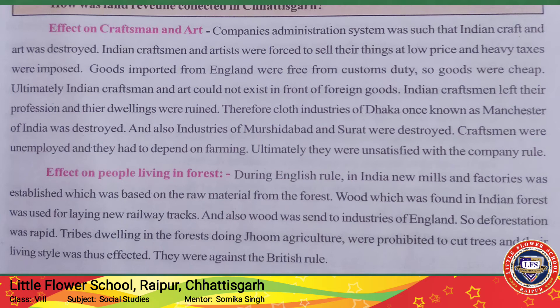Craftsmen became unemployed and therefore had to depend on farming. During English rule, many factories were established in India and raw material started coming from forests, which led to rapid deforestation. The tribes dwelling in the forests and doing jhum agriculture were severely affected.